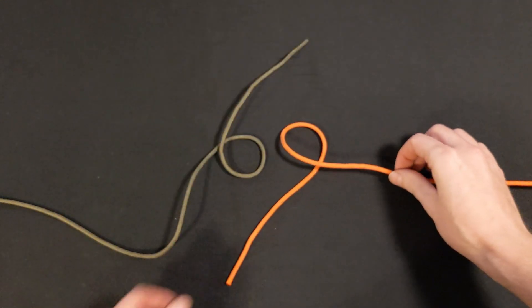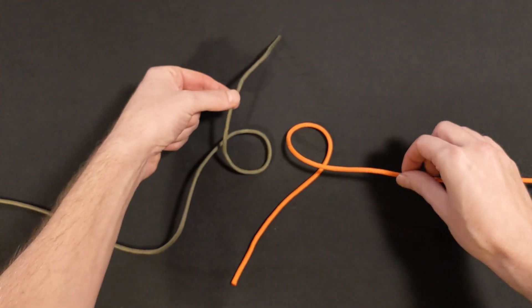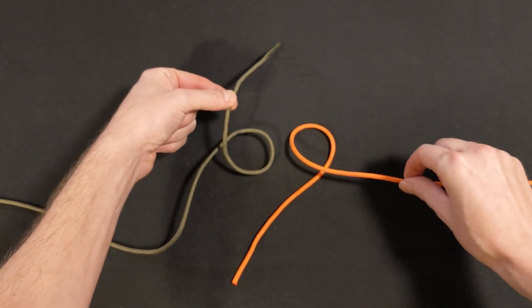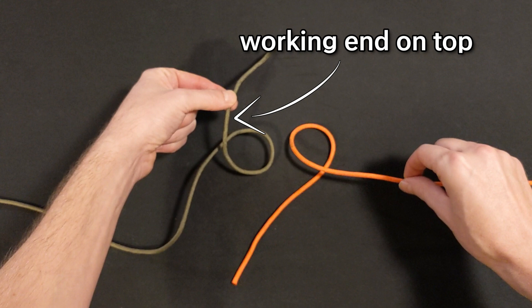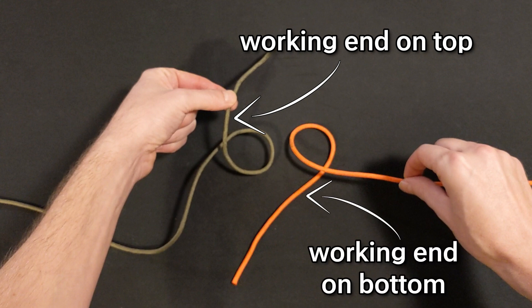It's important that these two loops have their working ends on opposite sides from one another. I do it with the working end on top of the 6, and the other working end on the bottom of the 9.